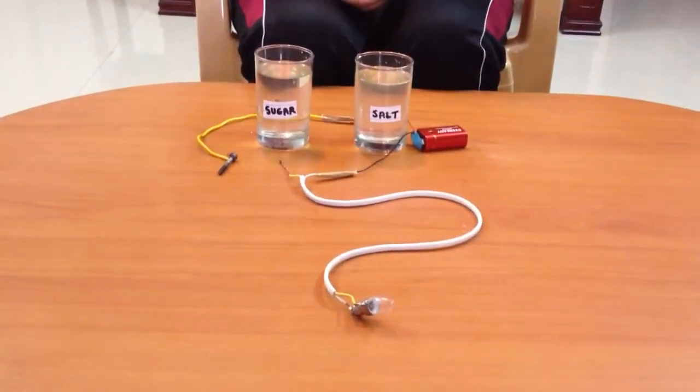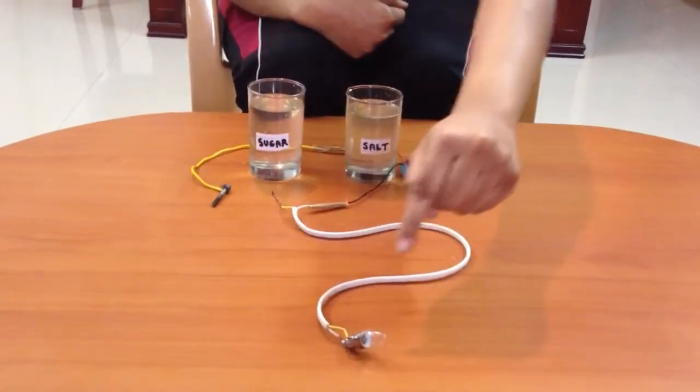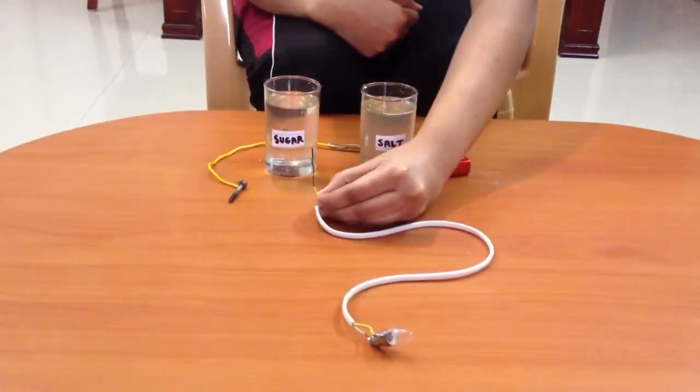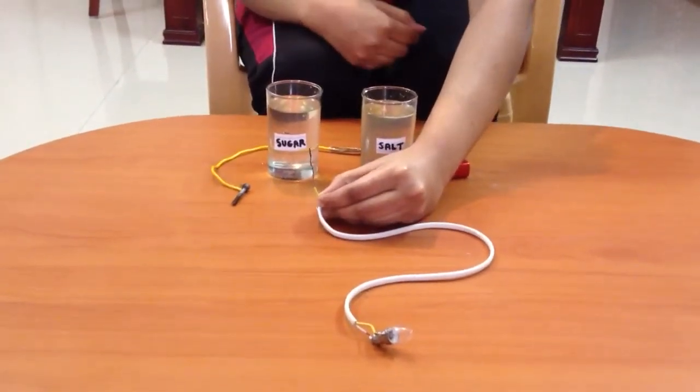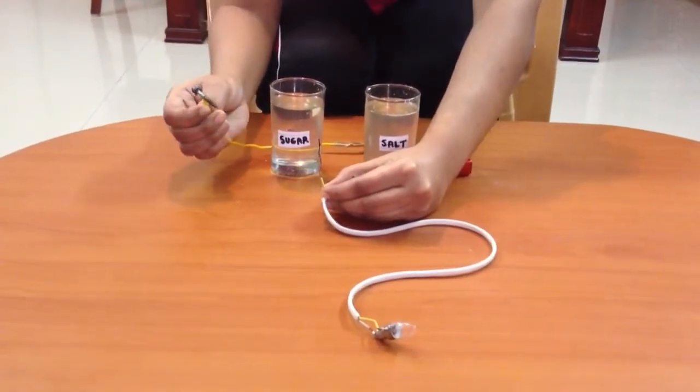In this circuit we have a cell and a bulb. One end is connected to the bulb and the other end from the bulb is kept open which acts as a cathode. The other end from the cell is connected to the screw which acts as an anode.